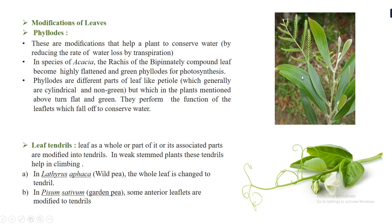There are also modifications of leaves. The first is phyllodes, seen in Acacia. In Acacia, the rachis of the bipinnately compound leaves becomes highly flattened and green, forming phyllodes that perform photosynthesis. The phyllode is a false leaf — it is actually the petiole that turns flat and green. The true leaf is small and falls off after maturity to prevent transpiration and water loss.